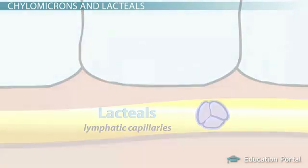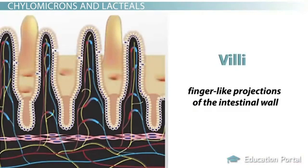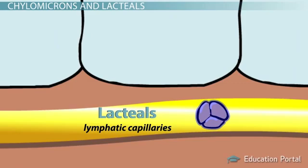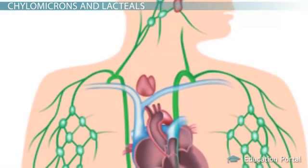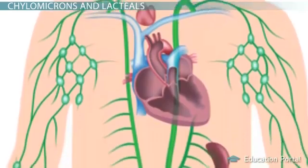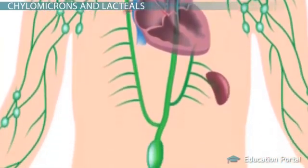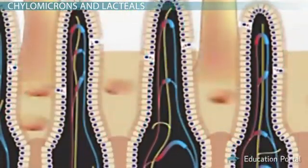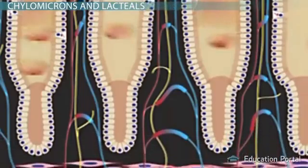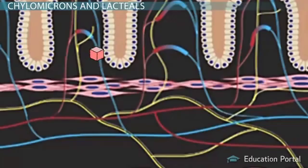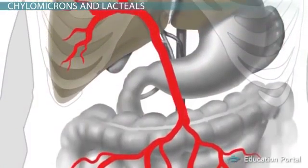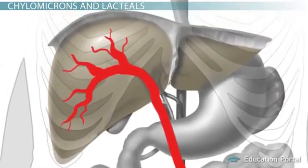The newly formed chylomicrons leave the epithelial cell and enter the lymphatic capillaries called lacteals, which are found in the finger-like projections of the intestinal wall called the villi. The lacteals represent another unique way fats are absorbed, because lipids pass through the lymphatic system before they make their way back to your bloodstream. This differs from protein and carbohydrate digestion, because amino acids and monosaccharides do not enter the lymphatic system — instead, they travel directly into the blood capillaries and then into the hepatic portal vein that leads to the liver.